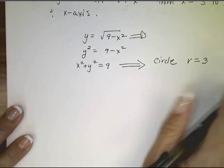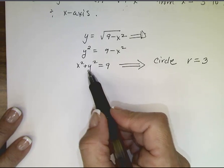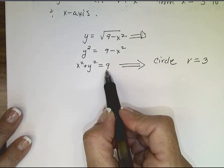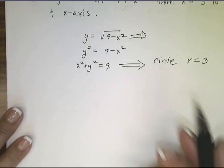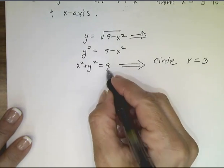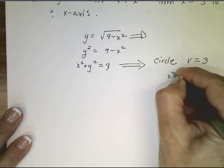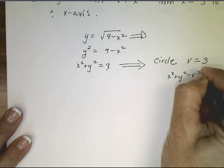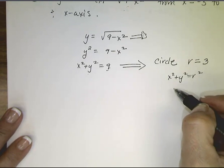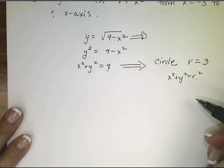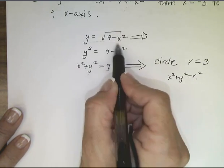That's the form of the equation of a circle centered at the origin with radius 3. So x squared plus y squared equals r squared is the formula for the circle centered at the origin of radius r. And this piece right here is the top half of it.